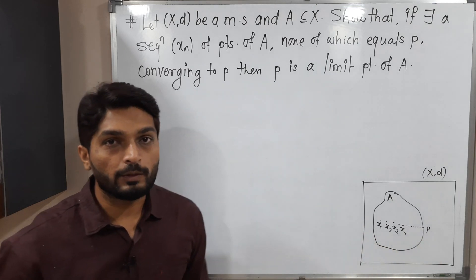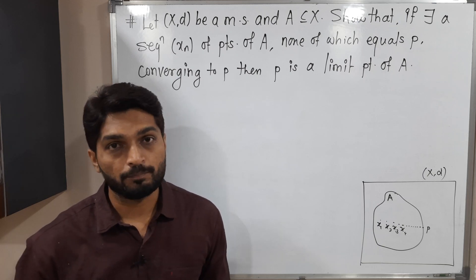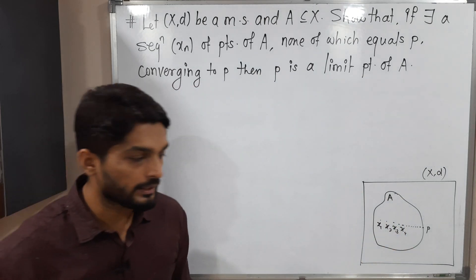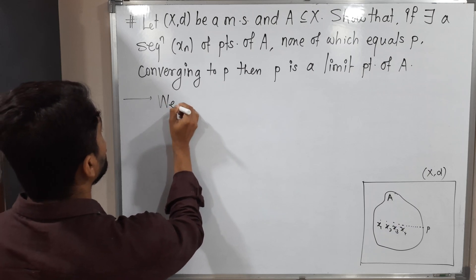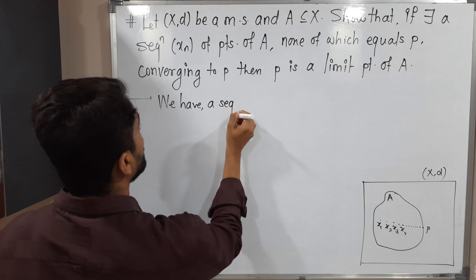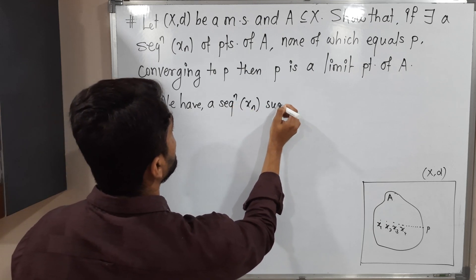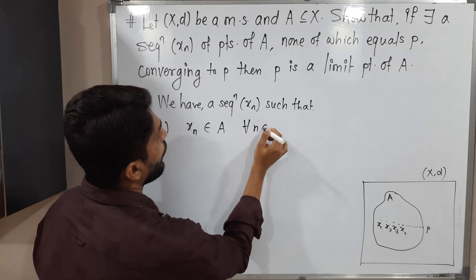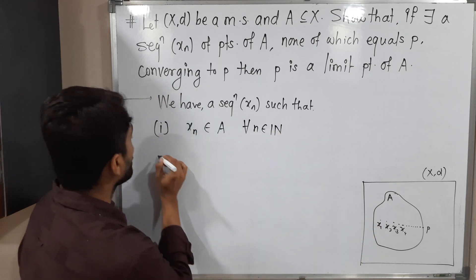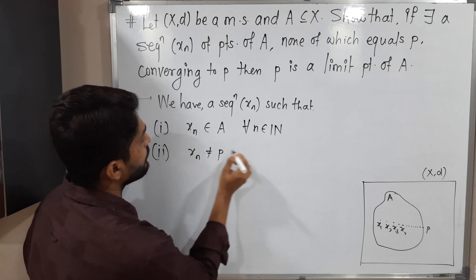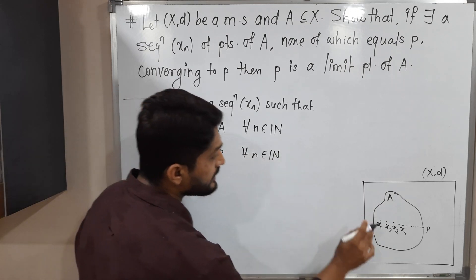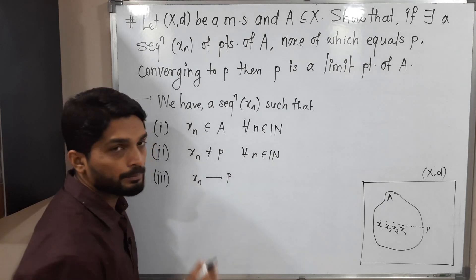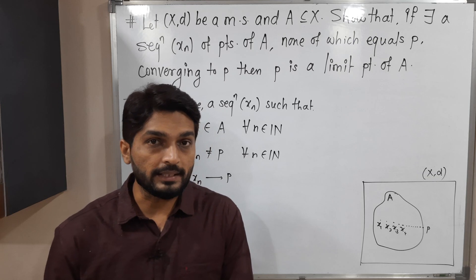And Xn is not equal to P — that means all terms of the sequence are different from P. What we have to prove? We have to prove that P is a limit point of A. So let us start with the given information. We have a sequence Xn such that: first, Xn belongs to A — all terms of the sequence are points of A. Second, Xn is not equal to P — all terms are different from P. Third and most important, Xn converges to P. And what we have to prove? We have to prove that P is a limit point of A.